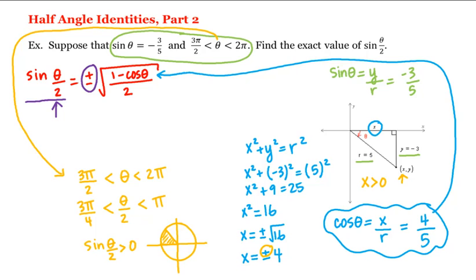Therefore, we're going to choose the positive value in our formula. Now there's a common mistake students make: looking at the figure, theta is in quadrant four and sines are negative in quadrant four, so students think they should choose the negative value. Don't look at where theta lies — look at where theta over two lies.